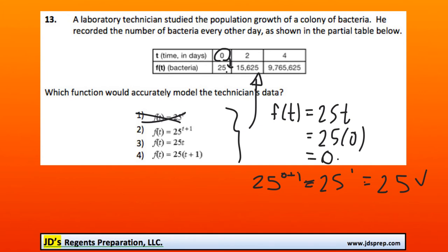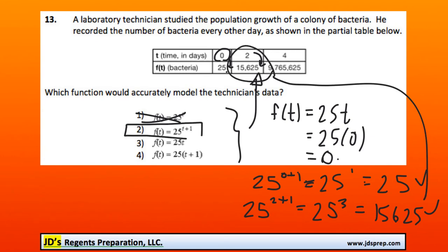Now to confirm, it's worthwhile to check with one more t value. Let's try it with 2. This time we do 25^(2+1), which is 25^3. If we calculate that, we get 15,625, which is the number we were hoping to get. This shows that this is the correct function.